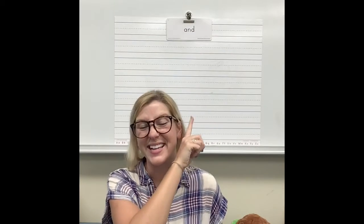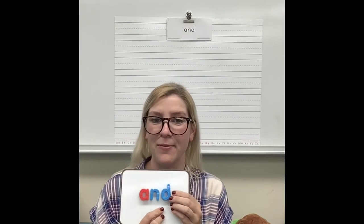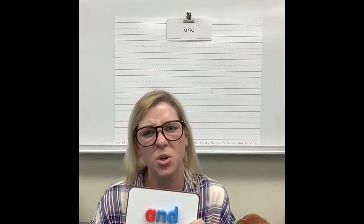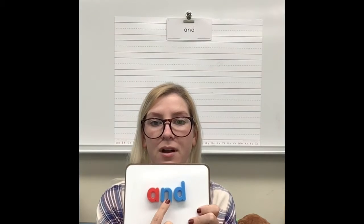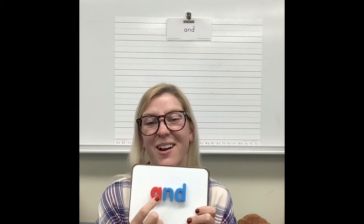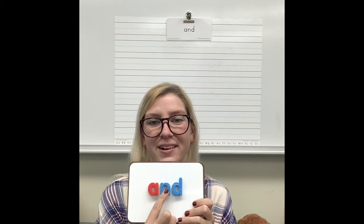This is the word 'and.' We need A, N, D to make the word 'and.' Can you spell it with me? Let's spell it like we're super grumpy: A, N, D — and. Let's find the vowels and consonants in 'and': vowel, consonant, consonant. Remember the vowels are red and the consonants are blue.